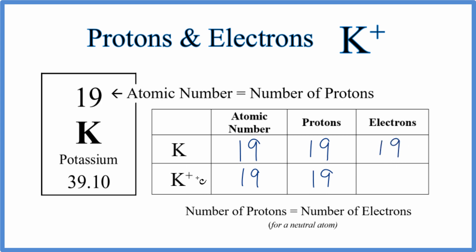For K+, we have this positive. It's a one plus. The one's not written, but we consider this to be a one plus. If you lose electrons, electrons are negative. So when you lose an electron, that negative charge, when you lose it, you become positive. So we've just lost one electron here. So instead of 19, we have 18 for the number of electrons for K+.